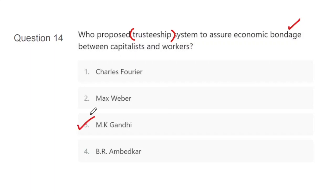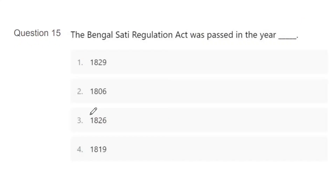Question 15: The Bengal Sati Regulation Act was passed in the year — when we study Indian Society, historical elements also come in, because Indian society has developed historically through many stages. GK-based questions are common from this topic. Options: 1829, 1806, 1826, or 1819. Year-based questions are frequently asked in CUET. The correct answer is A, that is 1829.